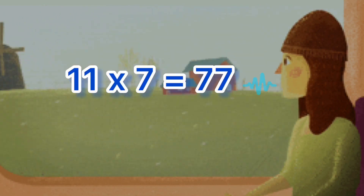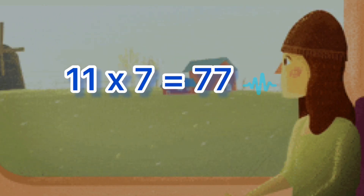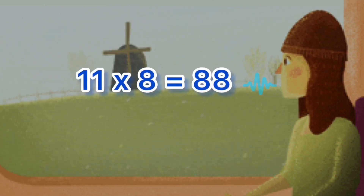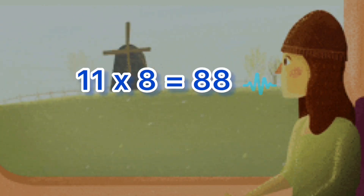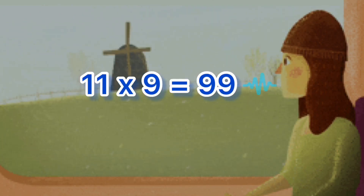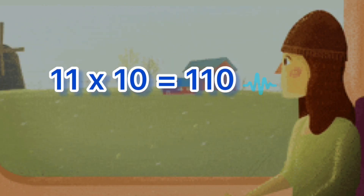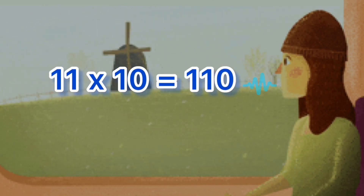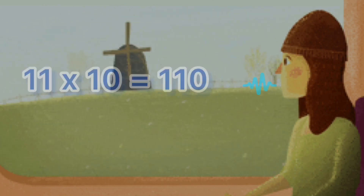Eleven sevens are seventy-seven. Eleven eights are eighty-eight. Eleven nines are ninety-nine. Eleven tens are one hundred ten.